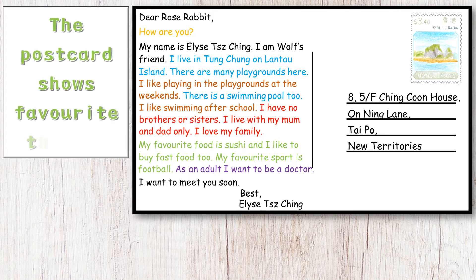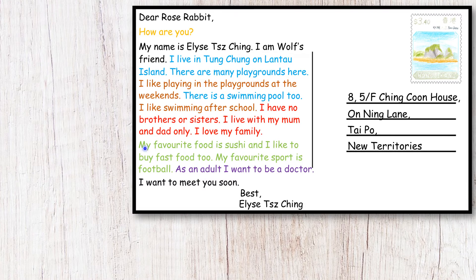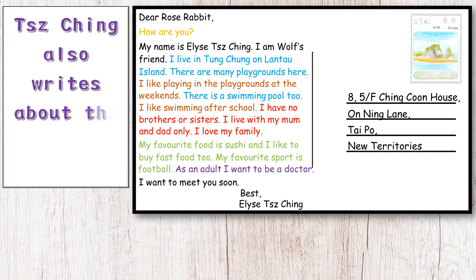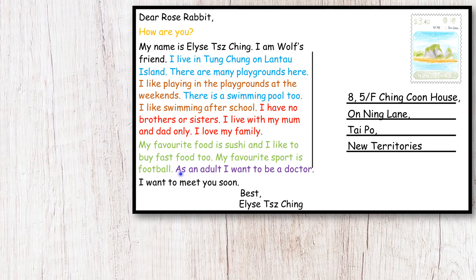The postcard shows favourite things. We can see some of Elise's favourites: 'My favourite food is sushi and I like to buy fast food too. My favourite sport is football.' It is good to put your favourite things in an introduction postcard. We can also see the job Tzijun wants: 'As an adult I want to be a doctor.' This introduces the reader to what type of job you would like.